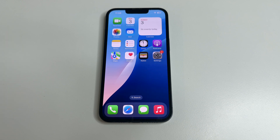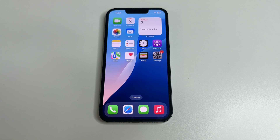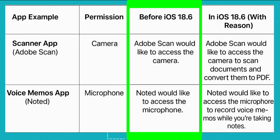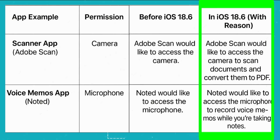Now if some app wants to get access to your camera, microphone, or location, it has to show you why it needs this permission. Before, apps just asked for access but it wasn't clear why they needed it. You didn't know if it was really necessary for the app to work or if it was for monitoring. Now you can see this information the first time an app wants to access a permission, and you can decide whether to grant it or not.